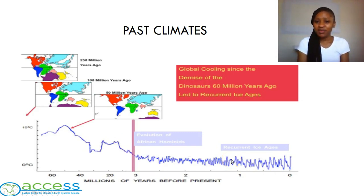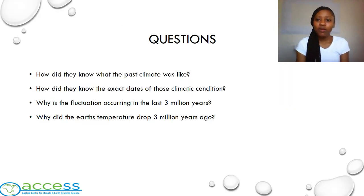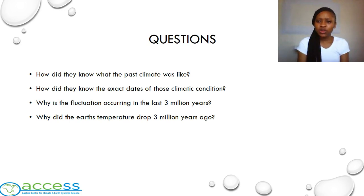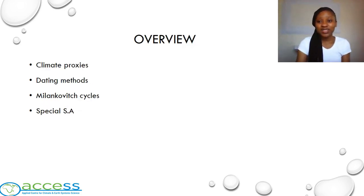In the beginning I said my name means 'question' in Tsonga — and yes, you've guessed it. After analyzing this past climate graph, I came up with some questions. Firstly, how did scientists know what the past climate was like 60 million years ago? Time-traveling machines have not yet been created for us to travel back and investigate. Secondly, how did they know the exact dates of those climatic conditions? Thirdly, why is there a fluctuation occurring in the last 3 million years? Fourthly, why did the earth's temperature drop 3 million years ago? To answer these questions, we are going to look at climate proxies, dating methods, the Milankovitch cycles, and why South Africa is special in terms of paleoclimate.